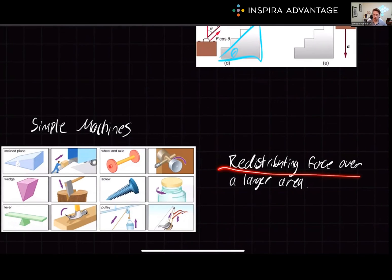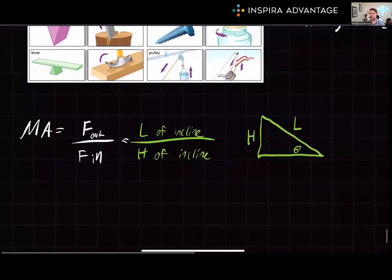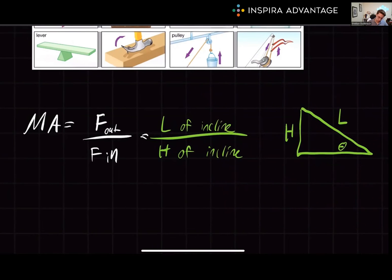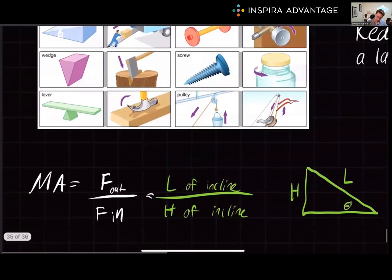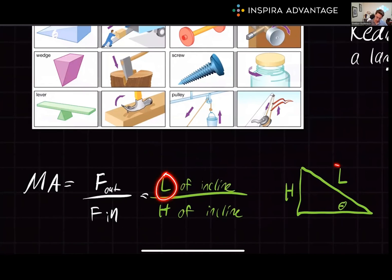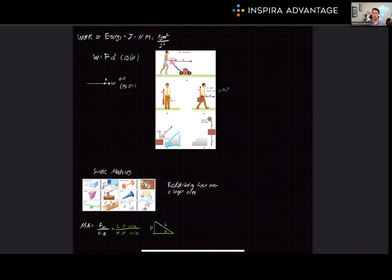Simple machines work by either changing the direction of the applied force or redistributing the force over a larger area, which can result in an increased output force or a reduced input force. To calculate mechanical advantage, put the force out on top divided by the force in. For an inclined plane, it's typically easier to use the length of the incline divided by the height — length over h. When mechanical advantage is greater than one, the machine is amplifying force; less than one means it reduces force; equal to one means no change in force, and the simple machine probably isn't doing much.